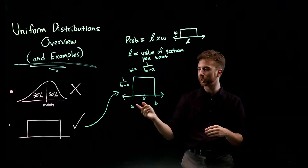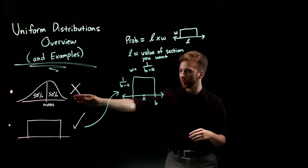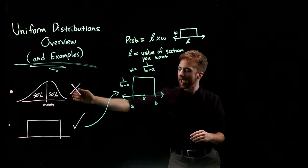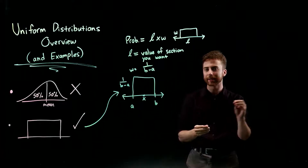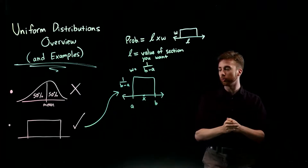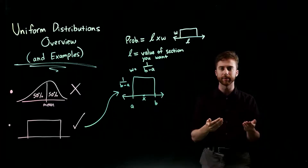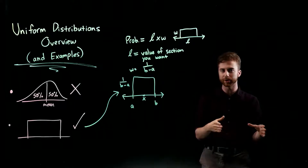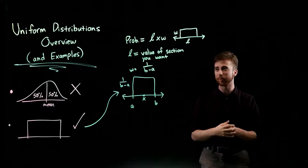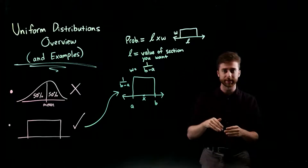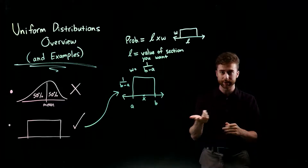With a uniform distribution, we're not dealing with uneven probabilities — every single outcome is just as likely as every other outcome. We can solve for probabilities just like with a normal distribution, and the process is very visual and simple. We'll just go through the steps and a few examples.